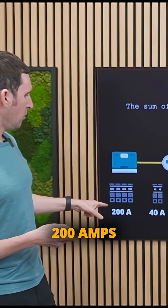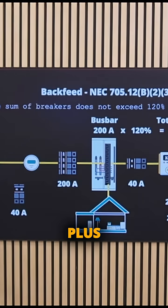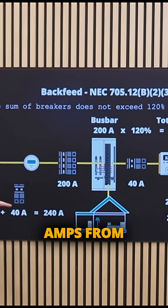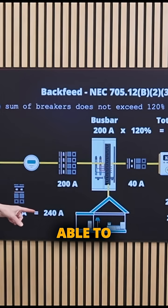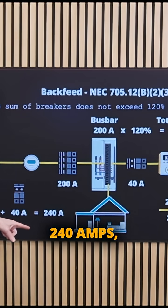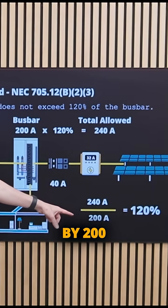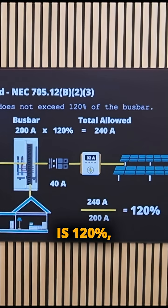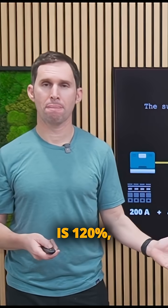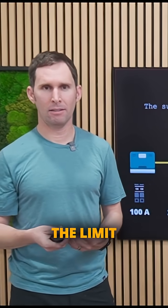So if we take that 200 amps from the grid, plus the 40 amps from the solar and or solar storage breaker rating, we're able to now backfeed 240 amps. 240 amps divided by 200 amps is 120%. And that's kind of the limit for what you can backfeed.